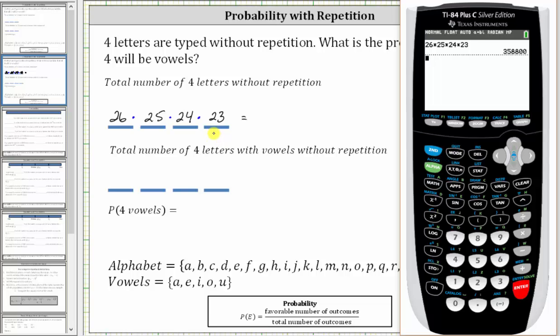Let's show that this gives us the same answer. We enter 26, select permutation, which is option 2 under the probability menu, then 4, and enter. We do get the same value.